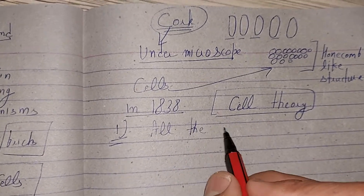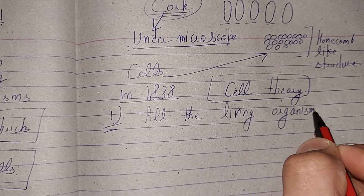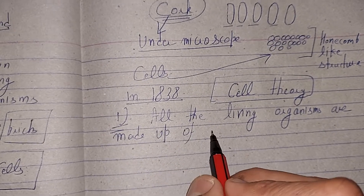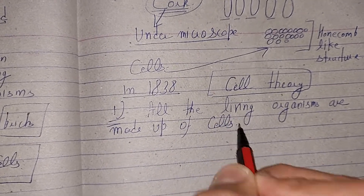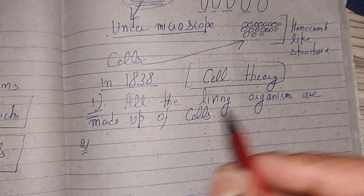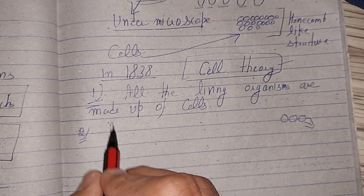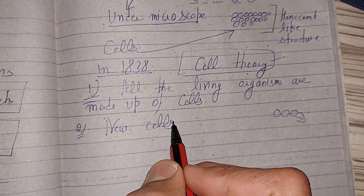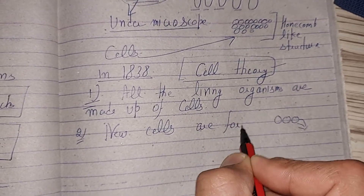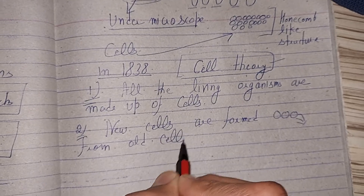What are the main points of cell theory? First point: all living organisms are made up of cells — plants are made of cells, animals are made of cells. Second point: new cells are formed from old cells. When old cells break or get destroyed, new cells are formed from pre-existing cells.